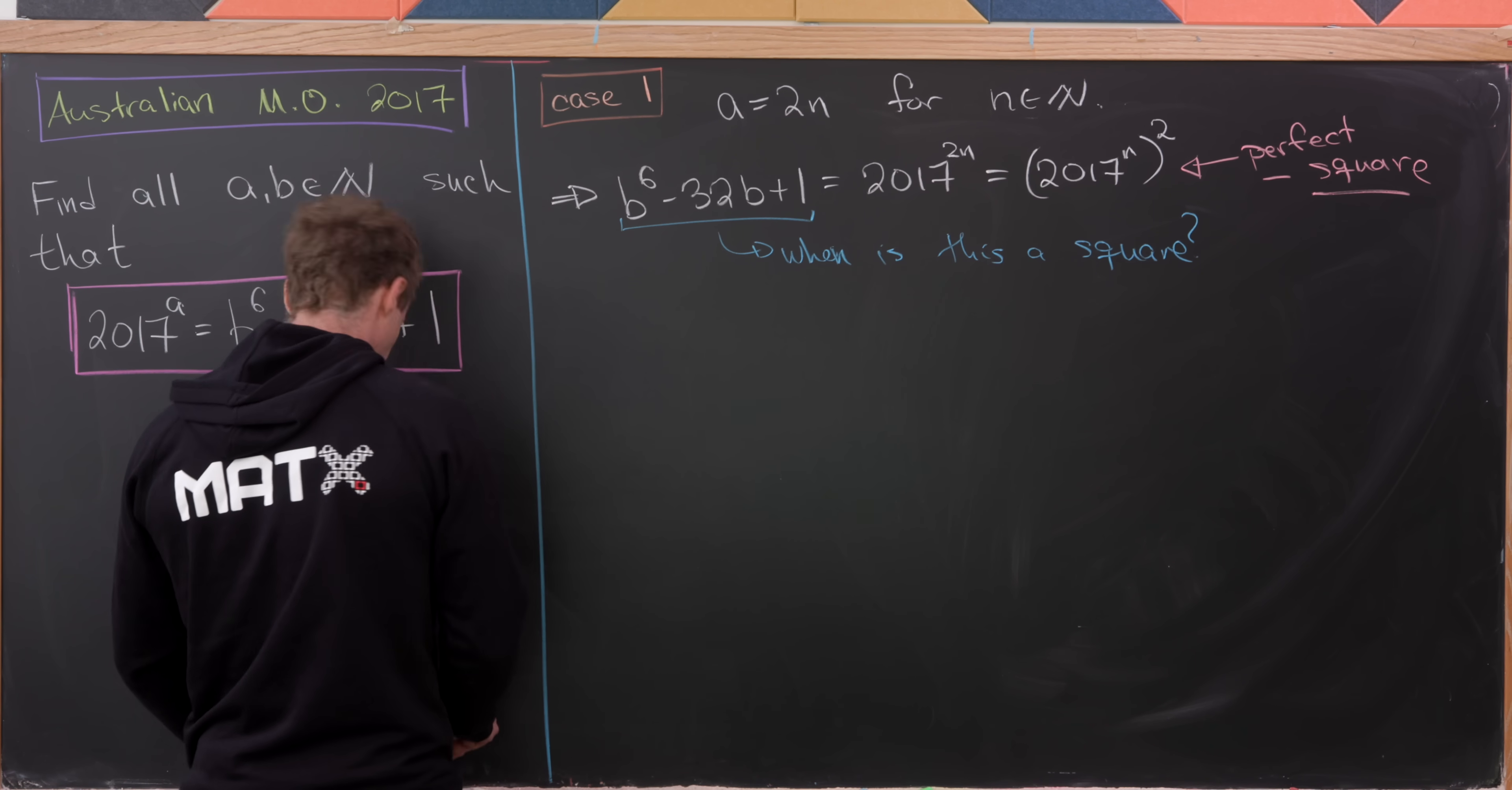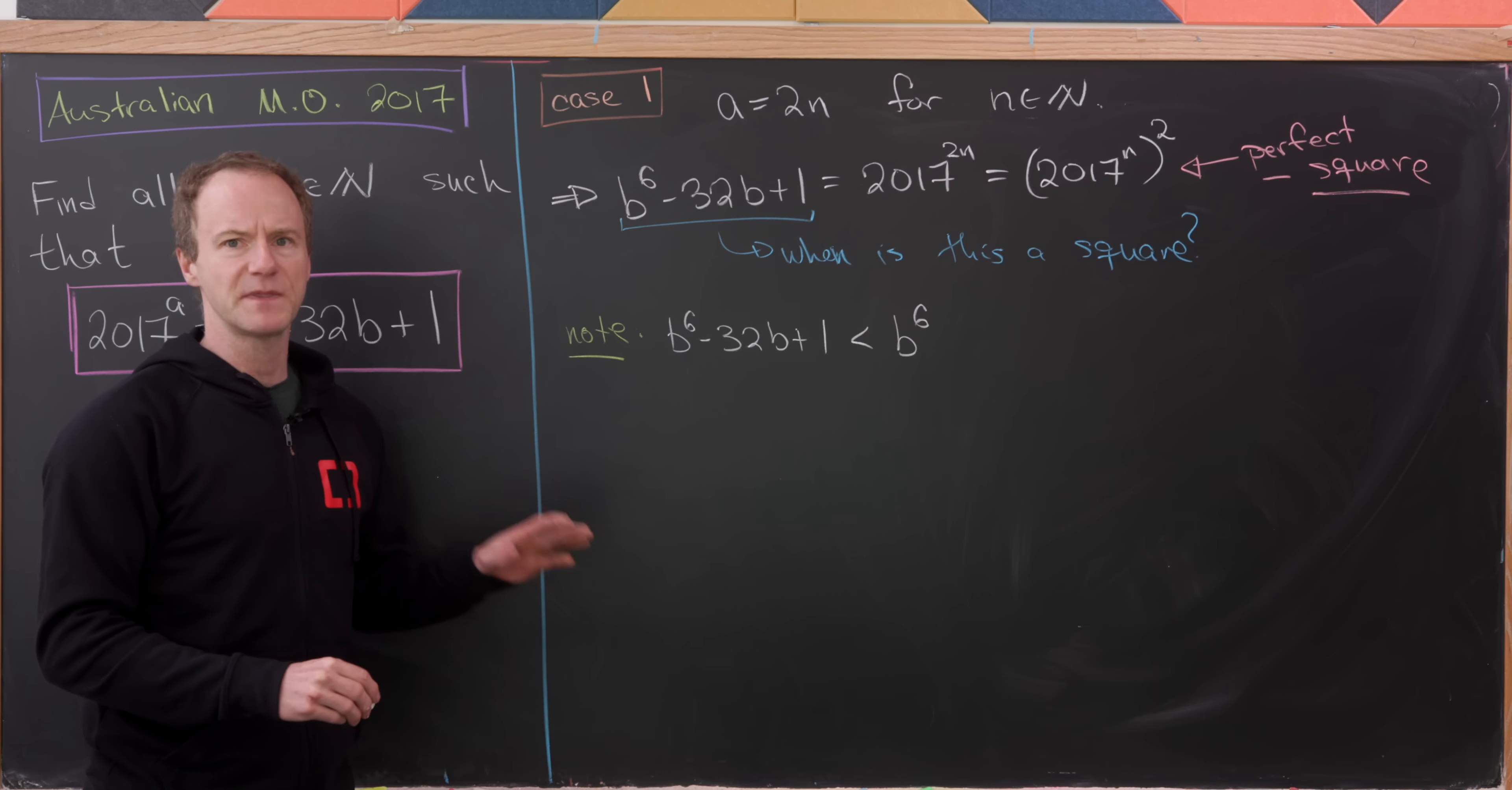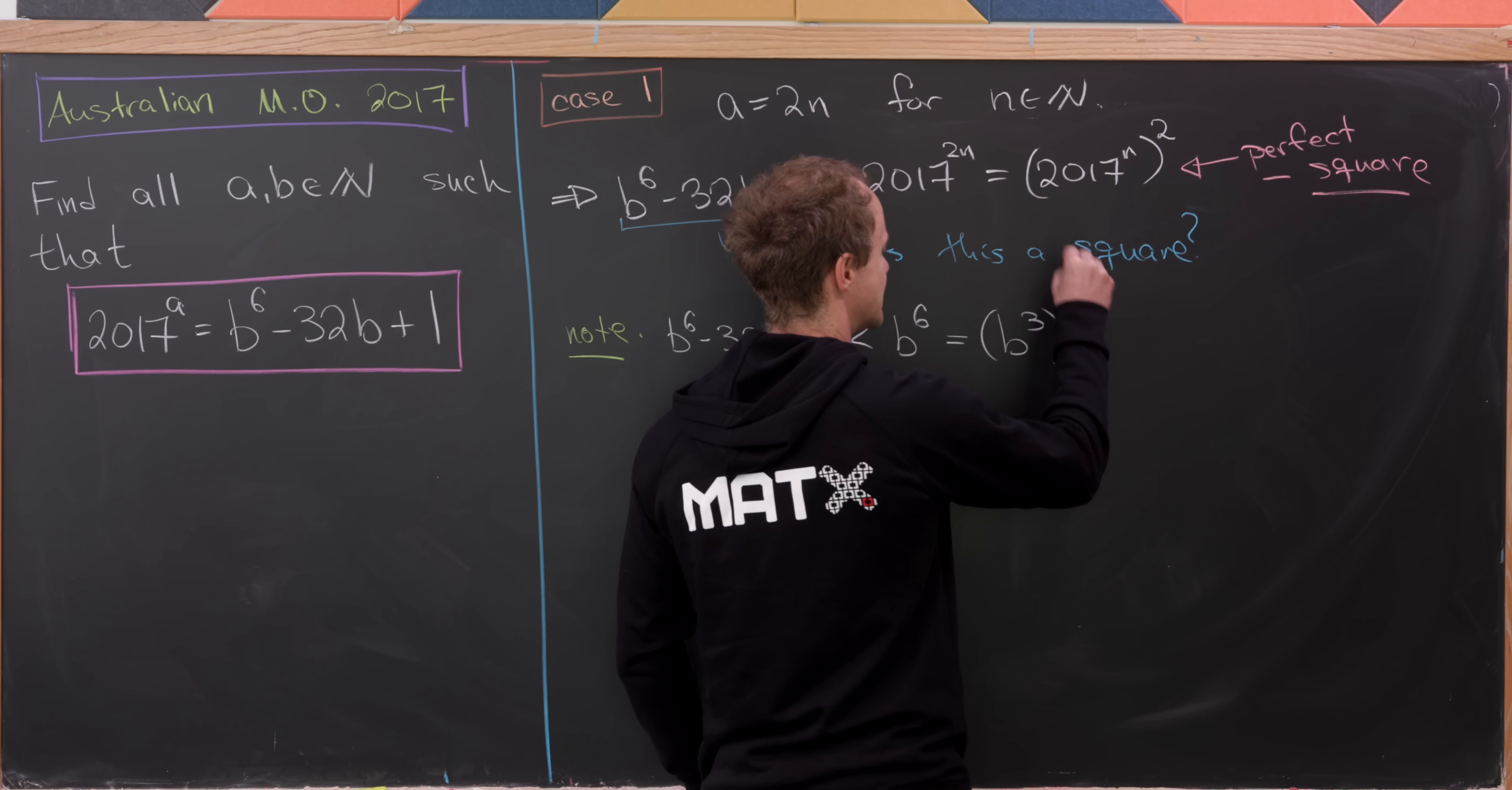Now we're going to look at a couple of observations. So the first one goes like this. Let's notice that B^6 minus 32B plus 1 is most definitely less than B^6. Well, that's because we're taking B to be a natural number. Natural numbers start at 1. So this minus 32B plus 1 is at least subtracting 31.